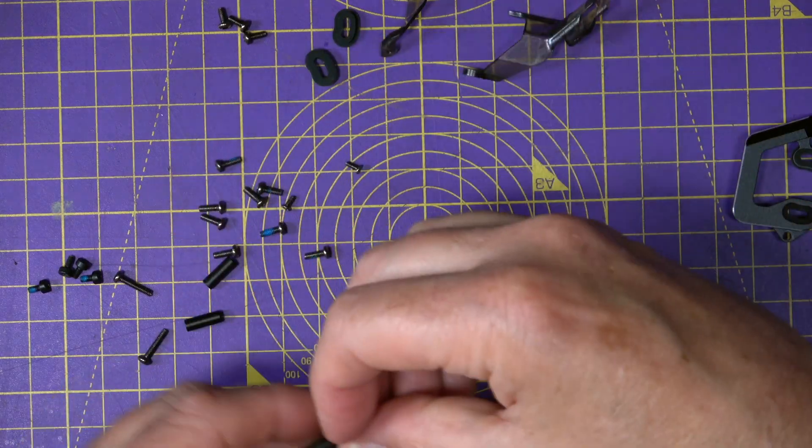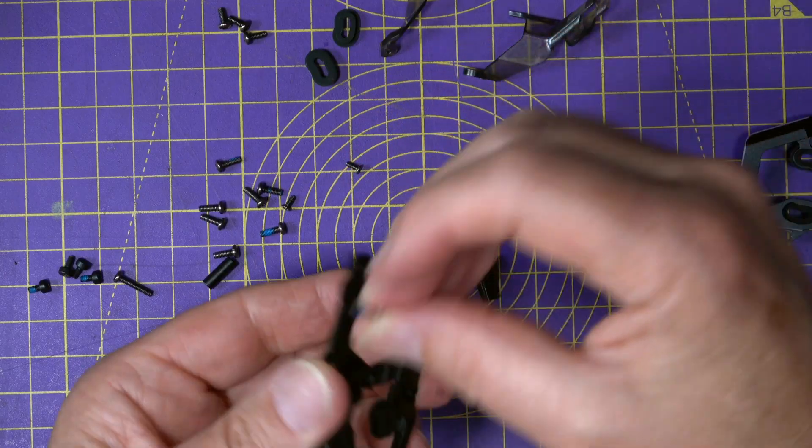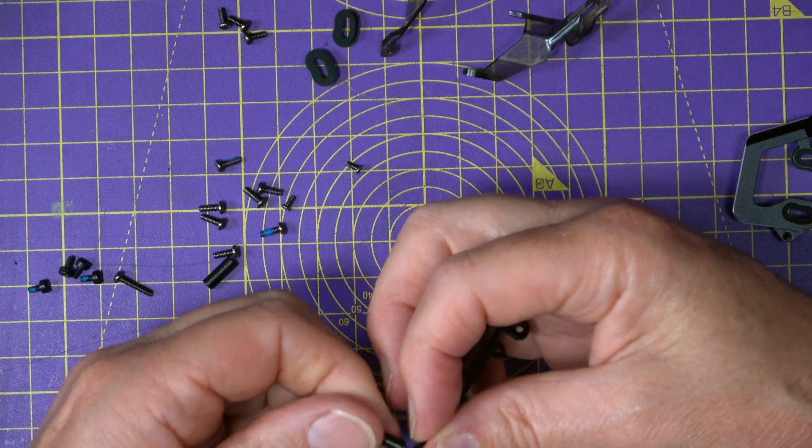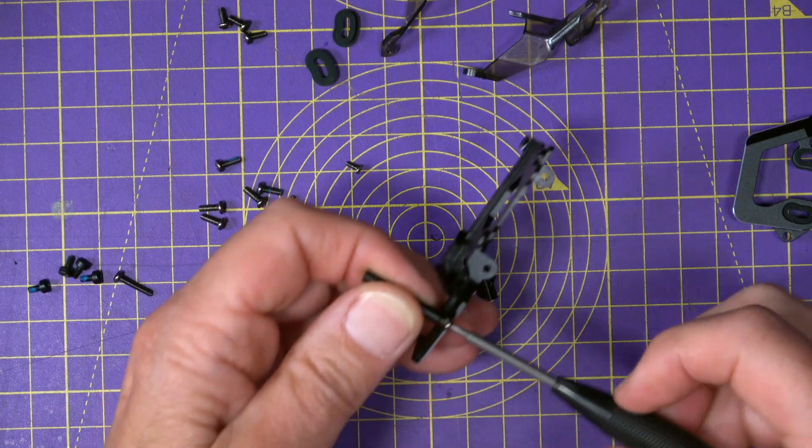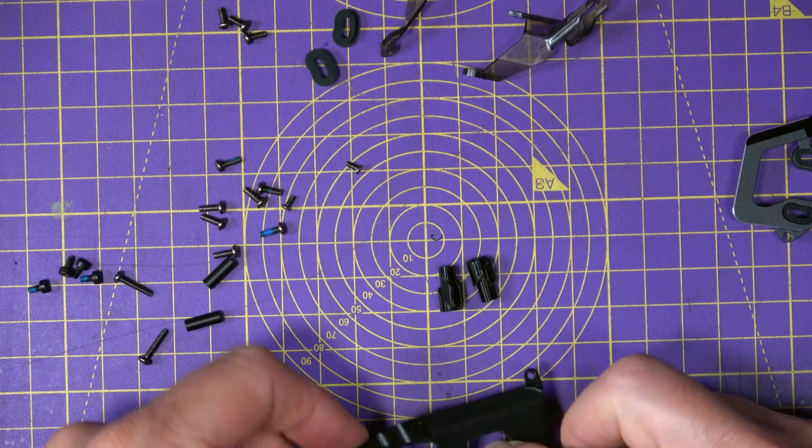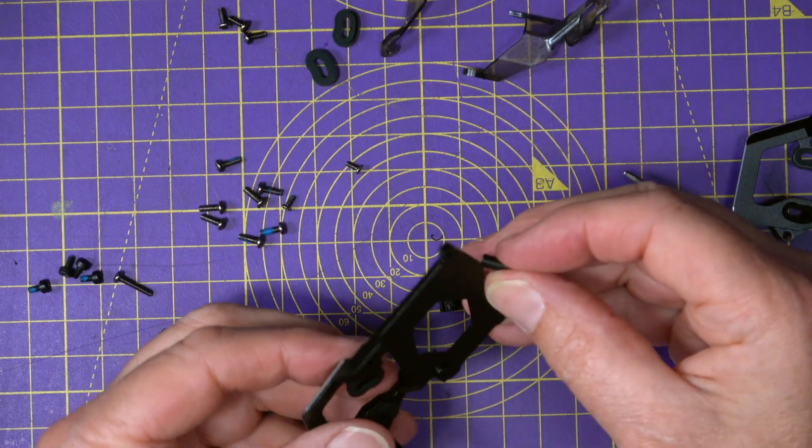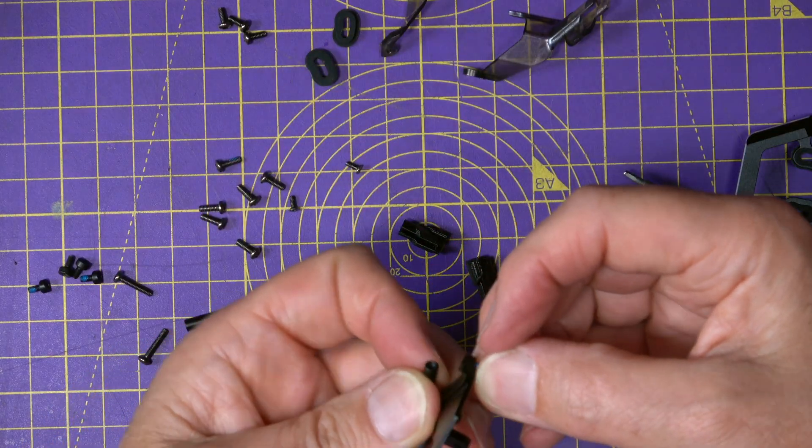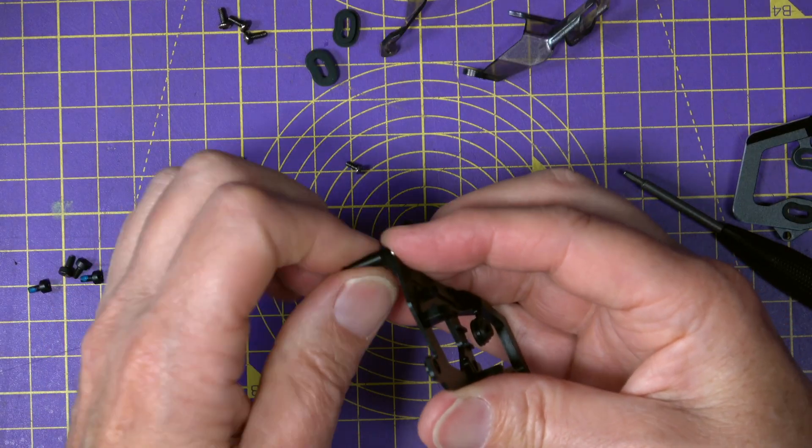Then I found the easiest thing to do is to use these M2 by 6 screws and put the standoffs in. That is a 22mm standoff and then you get these two 10mm standoffs and they go on the top. Once you know where everything goes it seems to be good. Hopefully I've got this the right way around. It seems to work.